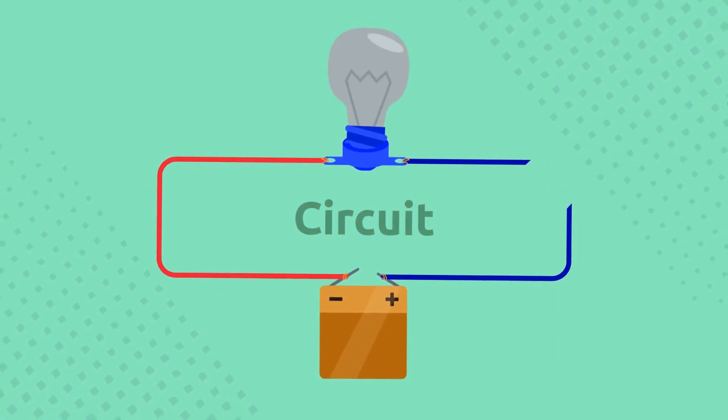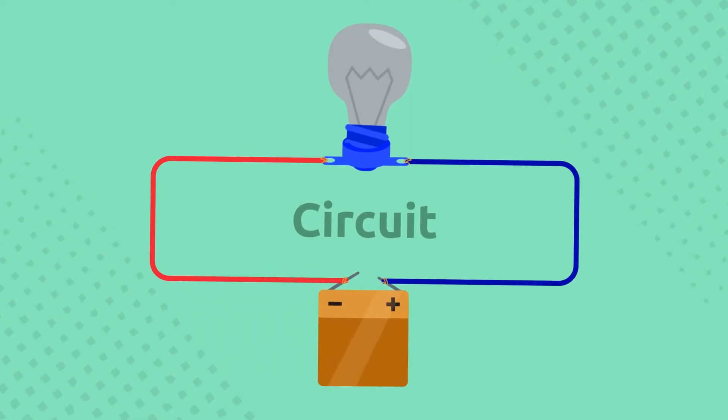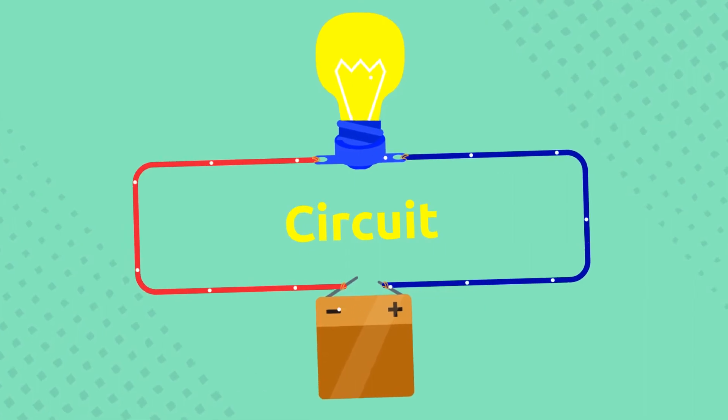If I disconnect this circuit, the electric current stops flowing and the light bulb turns off. When I reattach the wire, the light bulb turns back on. How cool is that?